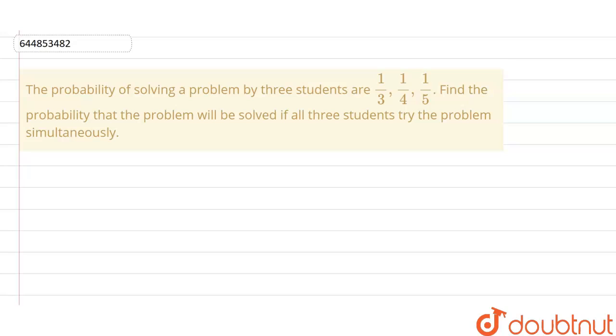Hello friend, here we have a question that probability of solving a problem by three students are 1 by 3, 1 by 4 and 1 by 5. Find the probability that problem will be solved if all the three students try the problem simultaneously.